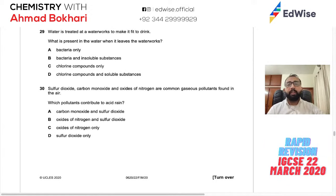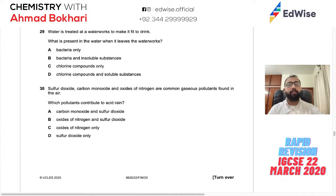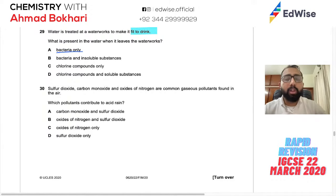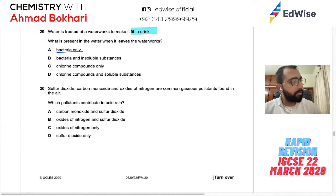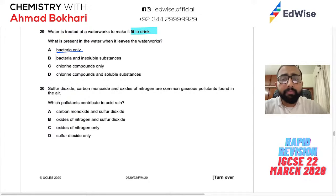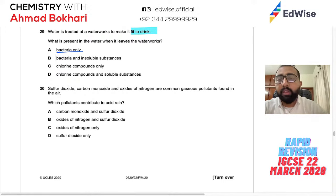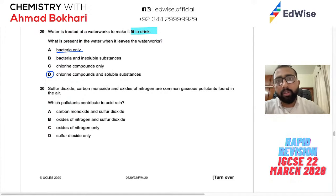Question 30: Water is treated at waterworks to make it fit to drink. We add chlorine compounds to kill bacteria and lower pH slightly. Insoluble substances are filtered out. The treated water still contains chlorine compounds and soluble minerals. Bacteria and insoluble substances should not be present when water leaves waterworks — they are removed. Soluble substances and chlorine compounds remain. Answer: B.